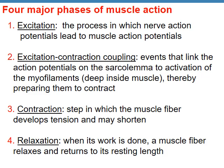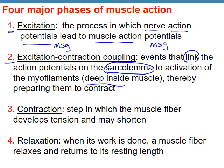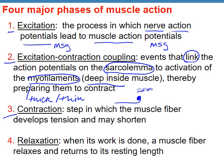Now we move on to the four phases of muscle action. Phase one is excitation — turning the nerve action potential into a muscle action potential. Phase two is excitation-contraction coupling — linking the sarcolemma message to the thick and thin myofilaments deep inside. Phase three is contraction — where the thick myosin reaches up and grabs the thin myofilament and pulls it over. Phase four is relaxation — all the work is finished and the muscle fiber returns to its resting state.